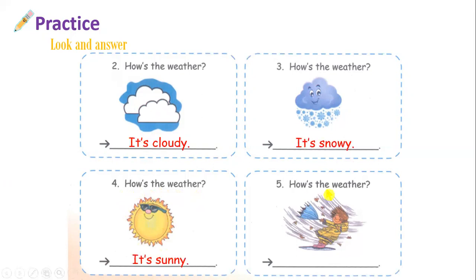Number five — how's the weather? Ở đây là trời có gió. Trời có gió. Và trời có gió sẽ là — đáp án sẽ là windy. How's the weather? It's windy.